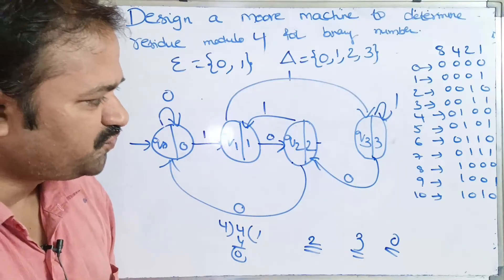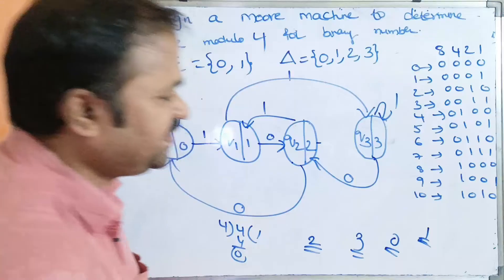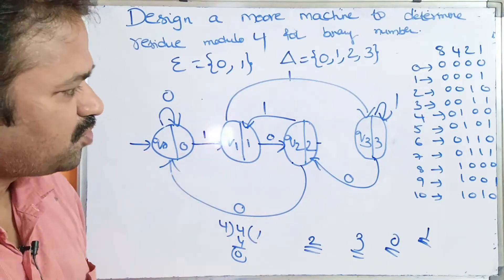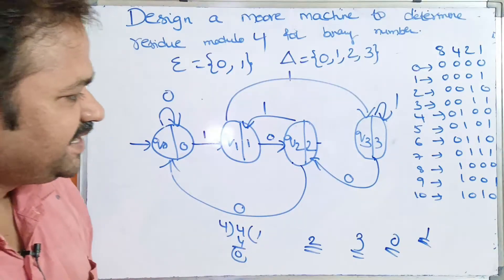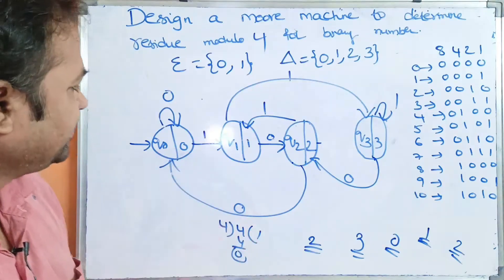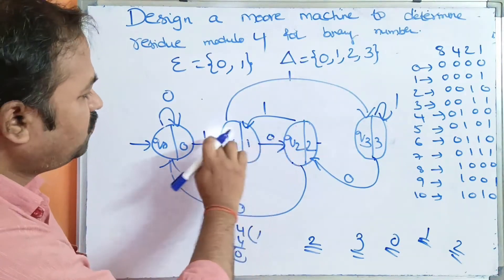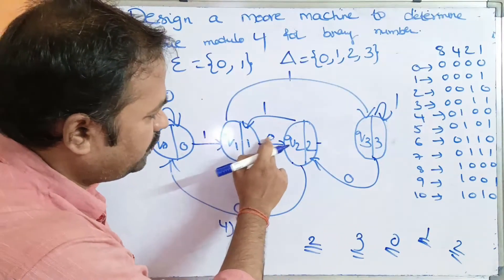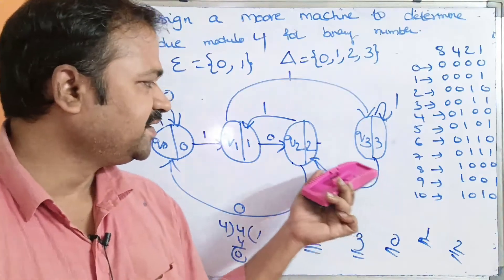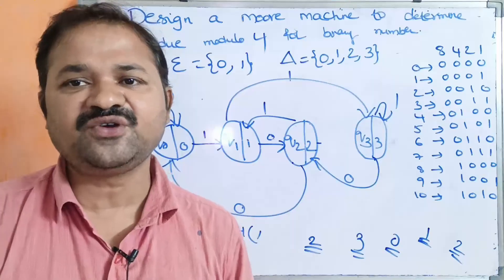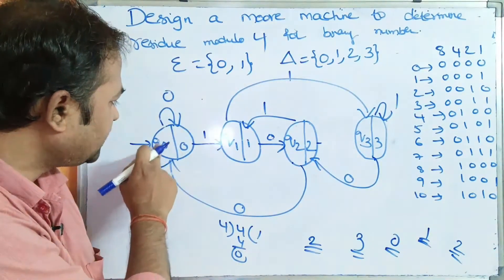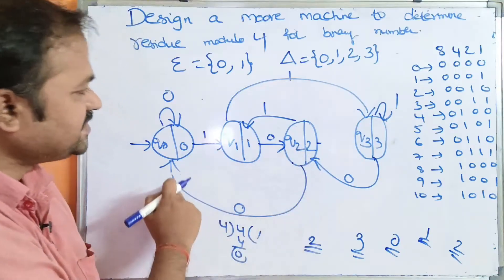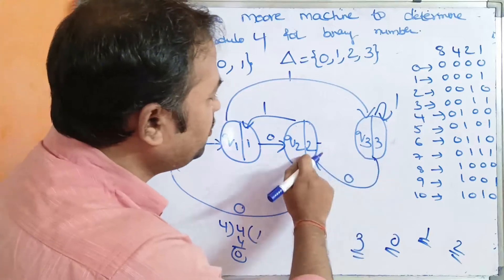For 9 (1001 in binary): 9 modulo 4 is 1. Applying 1, 0, 0, 1 leads us to Q1 — this is already covered. For 10 (1010): 10 modulo 4 is 2. Applying 1, 0, 1, 0: Q0→Q1→Q2→Q1 on 1, then Q1 on 0 gives Q2. Output is 2. Now we verify all states Q0–Q3 have transitions for both 0 and 1 — all are covered.